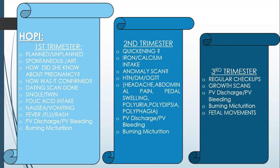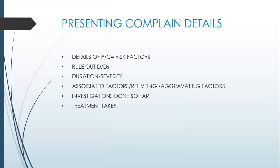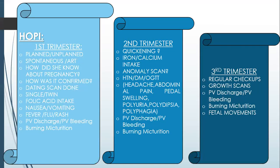In the third trimester, ask the patient about regular checkups, frequent growth scans, per vaginal discharge, per vaginal bleeding, burning micturition, and whether fetal movements are satisfactory to the mother. Regarding any presenting complaint besides gestational amenorrhea, take the details of that complaint — check risk factors, rule out differentials, ask about duration and severity, associated factors, relieving and aggravating factors, investigations done so far, and treatment taken. These presenting complaint details can be asked within the trimester-wise history or at the end of the third trimester history.